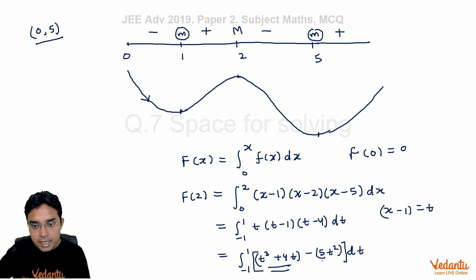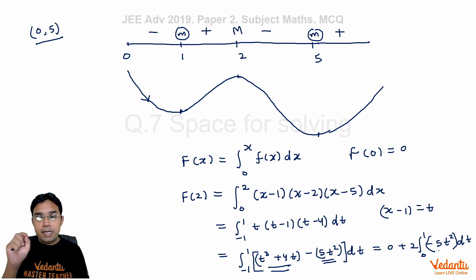Whereas the second one is an even function, so we can write 0 plus 2 times integral from 0 to 1 of -5t² dt.